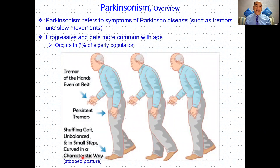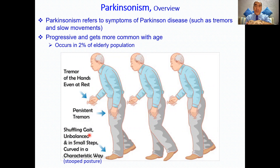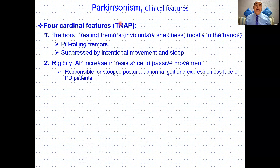Most commonly it occurs in the seventh decade of life. As you can see, this is what they call a stooped posture, when the patient is curved to the front. The most important clinical feature is the resting tremor, and there is a shuffling gait where the patient drags his or her feet on the floor with small steps. In detail, they have the mnemonic TRAP, which collects the most important clinical features of Parkinsonism.